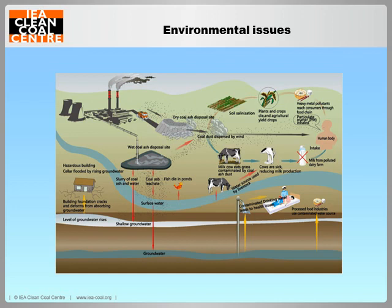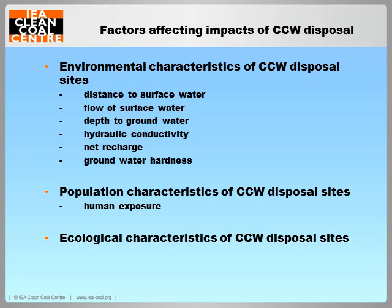CCW is generated in large volumes and has been accumulating at some sites for decades. Based on the chemical properties outlined earlier, CCW is likely to contain certain hazardous components that pose a risk to human health and the environment if not properly managed and if adequate controls are not in place. The main hazards are soil contamination, water contamination, dust dispersion, and toxins entering the food chain. The impact of CCW disposal on the environment and human health is affected by the environmental, population, and ecological characteristics of the disposal sites.